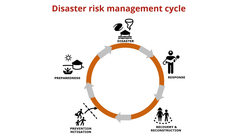Now we know what disaster risk is — let's look at disaster risk management. Disaster risk management is the application of disaster risk reduction policies and strategies to prevent new disaster risk, reduce existing disaster risk, and manage residual risk, contributing to the strengthening of resilience and reduction of disaster losses. From the diagram, there are four different phases in the disaster risk management cycle: prevention, mitigation, and preparedness — activities done before a disaster strikes — and response, recovery, and reconstruction — activities done immediately or right after a disaster event.